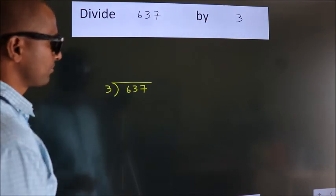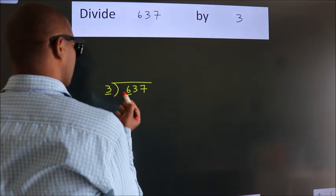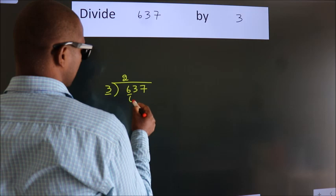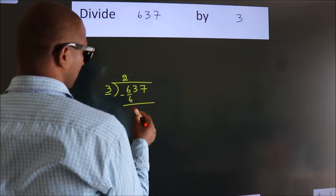Next, here we have 6, here 3. When do we get 6? In the 3 table, 3 times 2 is 6. Now, we should subtract, we get 0.